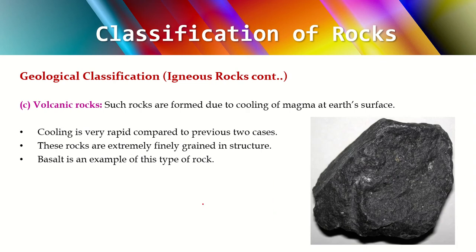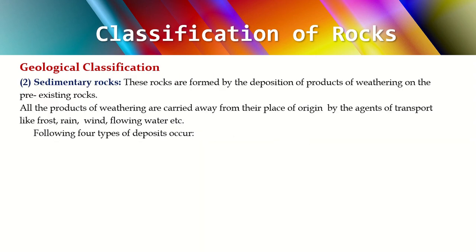Volcanic rocks, as the name suggests, are formed due to the cooling of magma or lava on the earth's surface — where volcanoes erupt. Basalt is a good example of a volcanic rock. The cooling here is very rapid compared to the other two types, resulting in extremely fine-grained particles or texture. This concludes volcanic rocks.